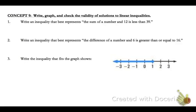Number 1 says write an inequality that best represents this statement. The sum of a number - we know that sum means add. When we have an unknown number, we'll use x. So we have the sum of a number, x, and 12. So x plus 12 is less than, and the symbol we use is an arrow pointing to the left, less than 39.